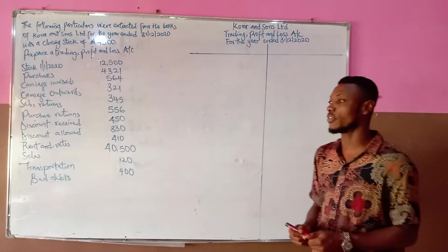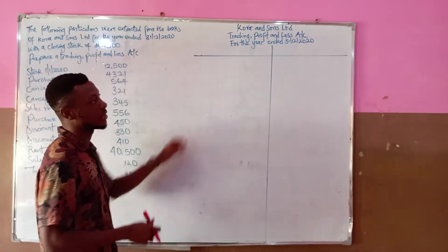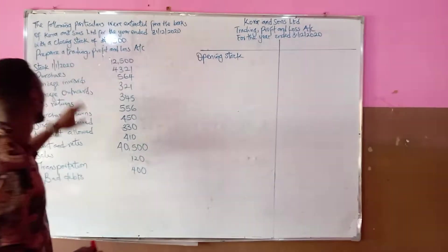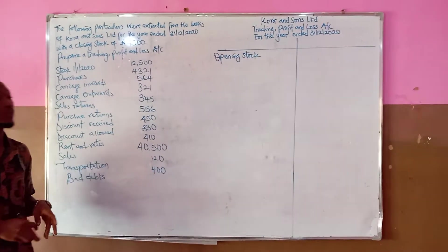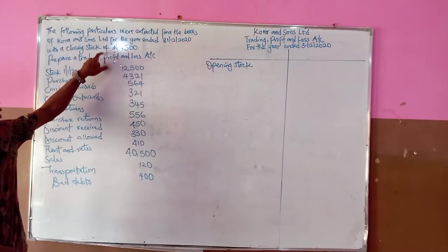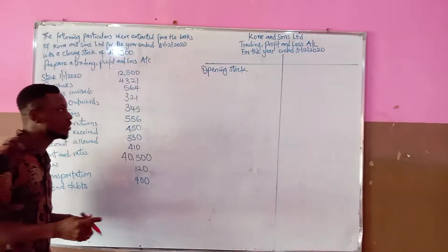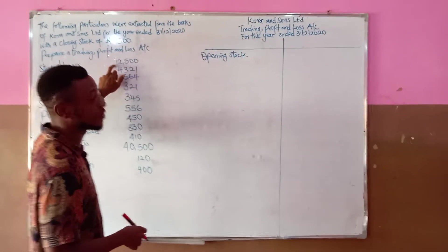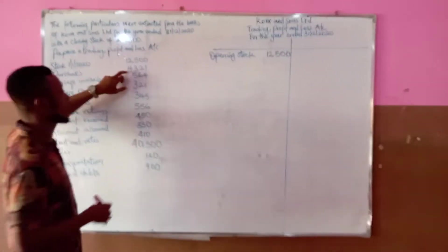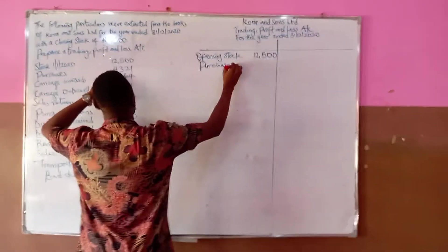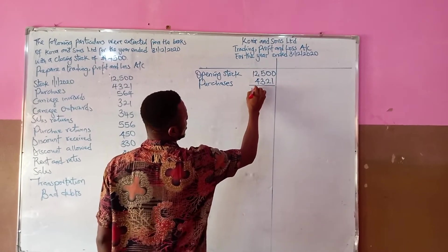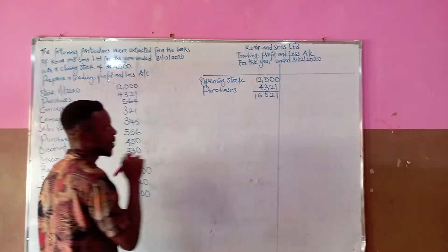In the trading profit and loss account, we start with opening stock on the debit side. If the full description is not given, we differentiate opening stock and closing stock by date — here it's 1st January 2020, and the opening stock is 12,500. We then add purchases of 4,321, giving us 16,821.